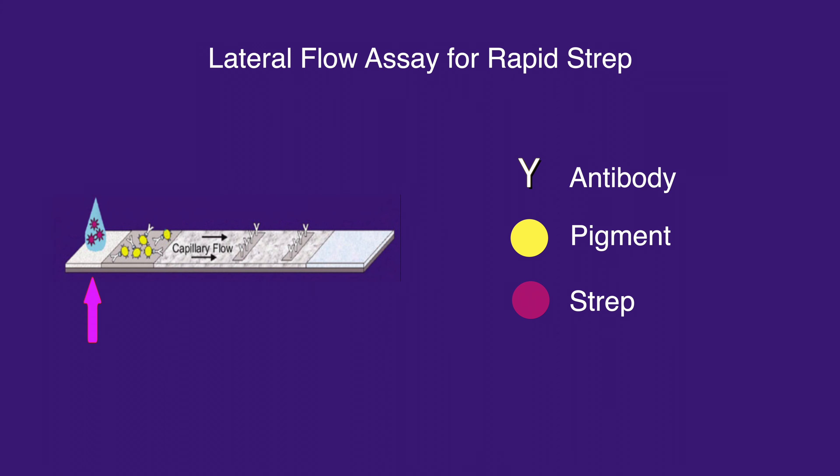In the image below, strep is depicted as a purple circle, antibody as a white letter Y, and pigment shown as a yellow circle.